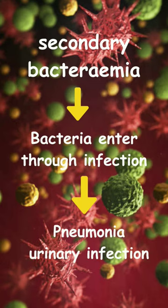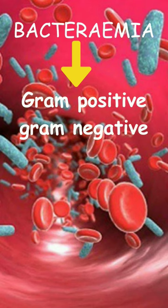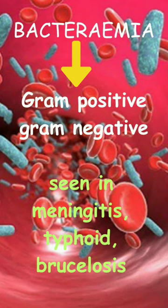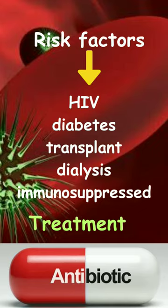In secondary bacteremia, the bacteria enter the blood through some other infection focus, like pneumonia or urinary tract infection. Bacteremia can be gram positive or gram negative, and is more often seen in meningitis, typhoid, and brucellosis. Risk factors include HIV, diabetes, transplant, dialysis, and immunosuppressed patients. The condition is treated by effective antibiotic therapy.